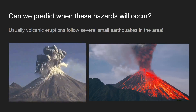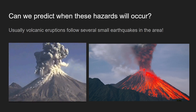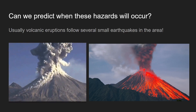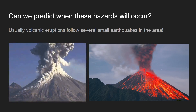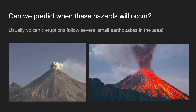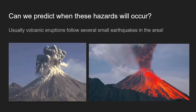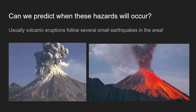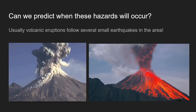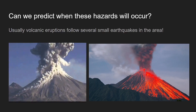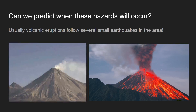Volcanic eruptions are also surprisingly pretty predictable. If you have seismic graphs around an active volcanic area, there are usually a couple of small earthquakes in the area before a volcanic eruption follows. That makes sense because things are moving down there, causing seismic waves which we feel and call an earthquake, and then a volcanic eruption occurs after.